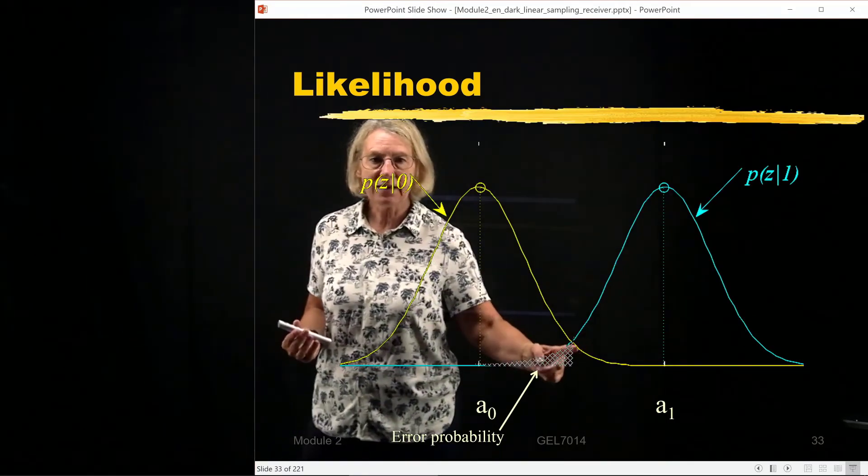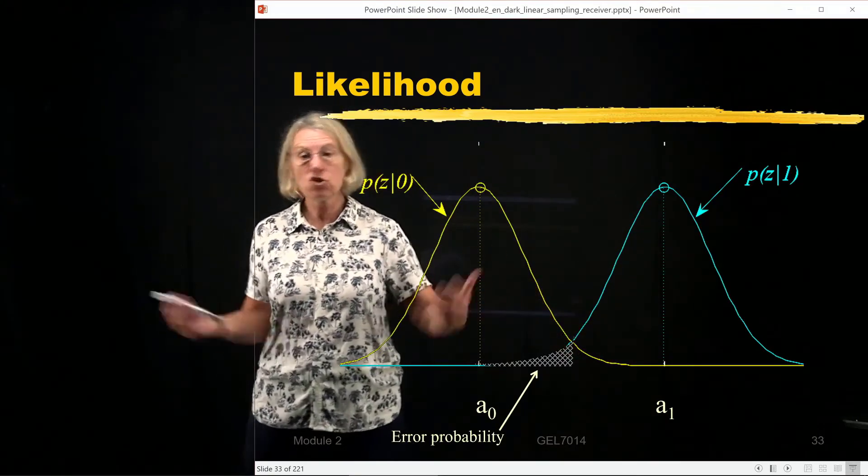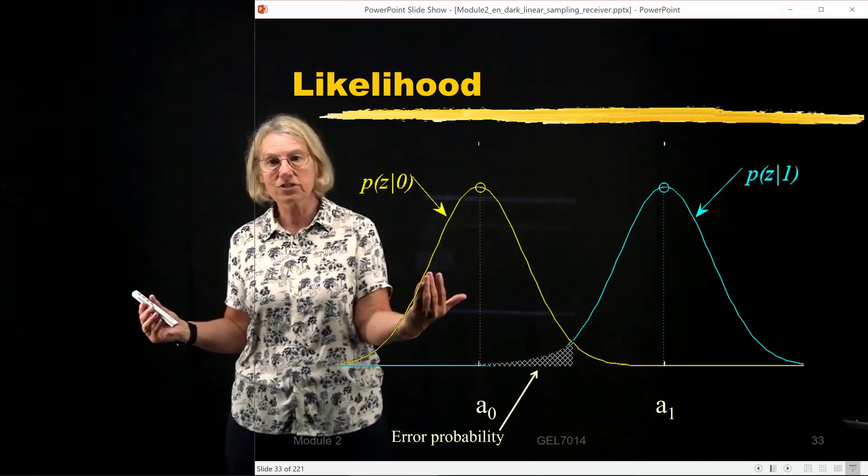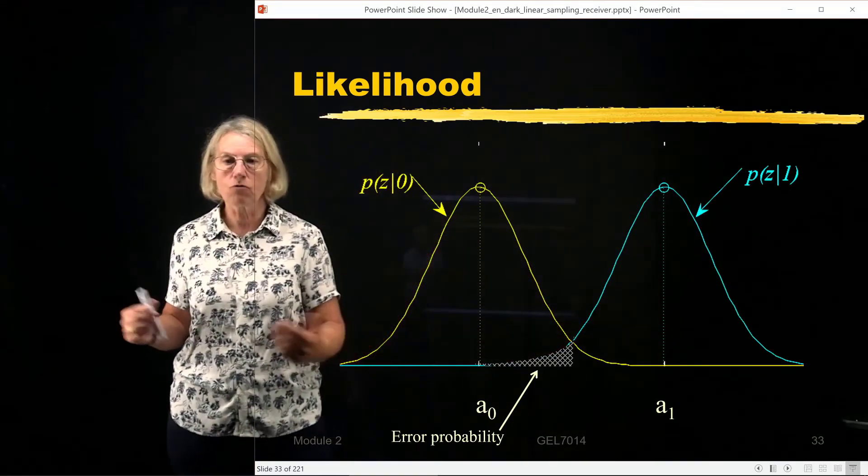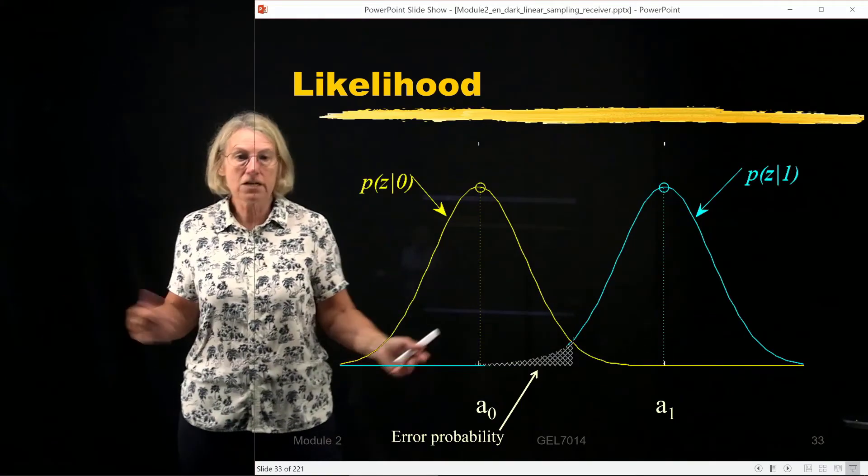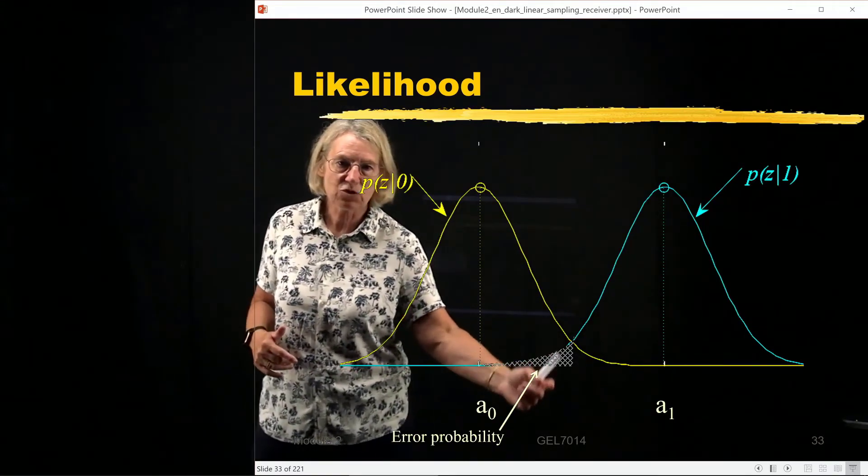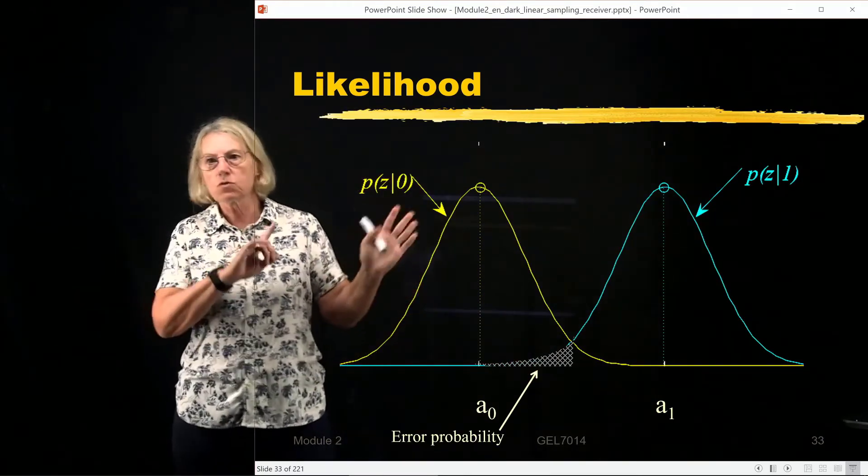instead of being to the right side of the gamma, we were on the left side. The noise just pushed us in this direction. Because the noise pushed us in this direction, and it pushed us enough to go over the threshold, we made an incorrect decision. Because if we had a z which was less than the threshold, then we will choose 0. But it wasn't a 0, it was a 1.